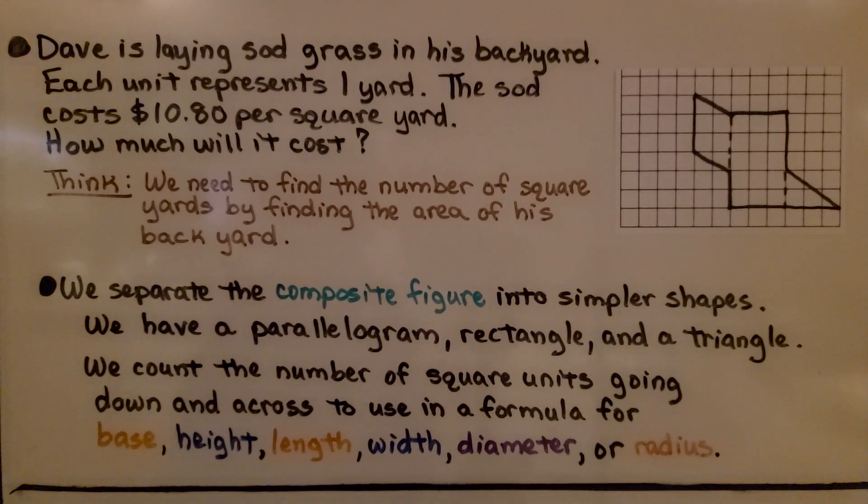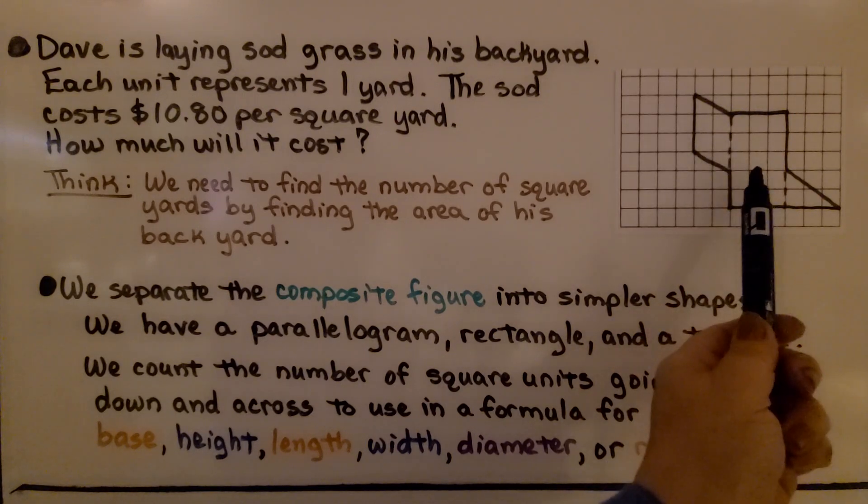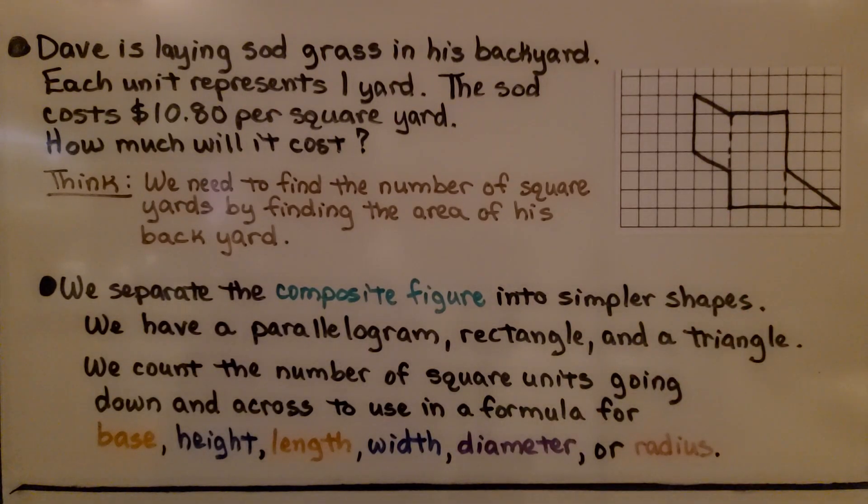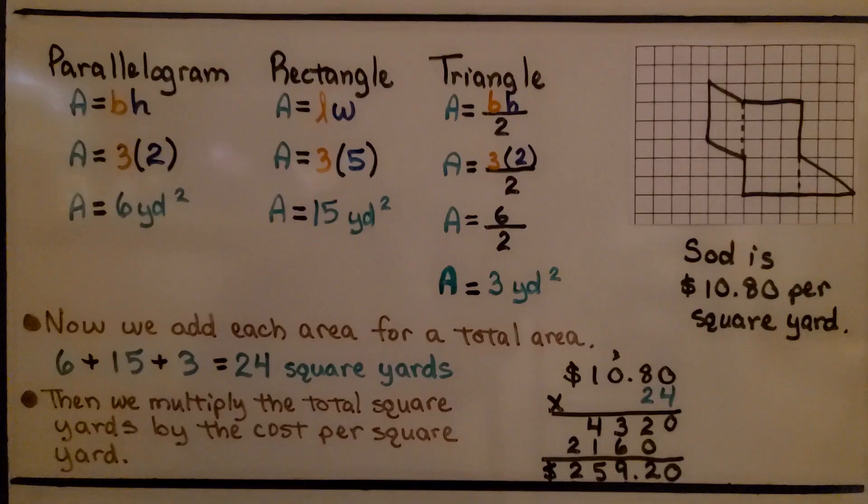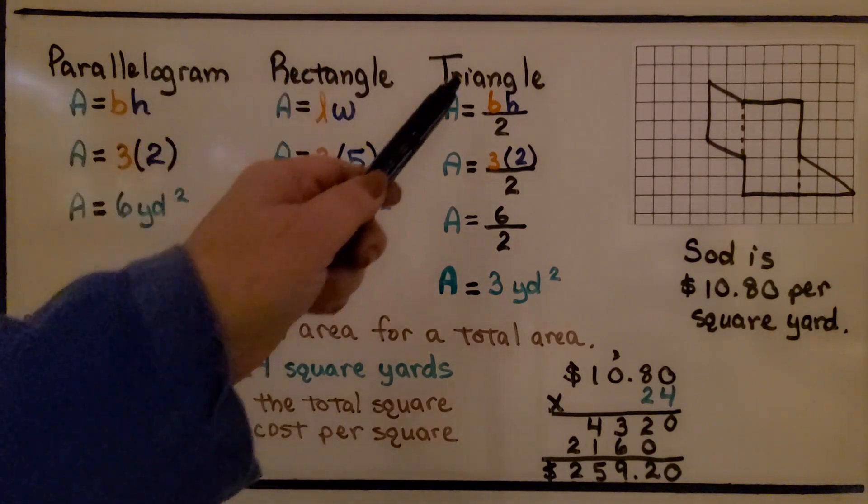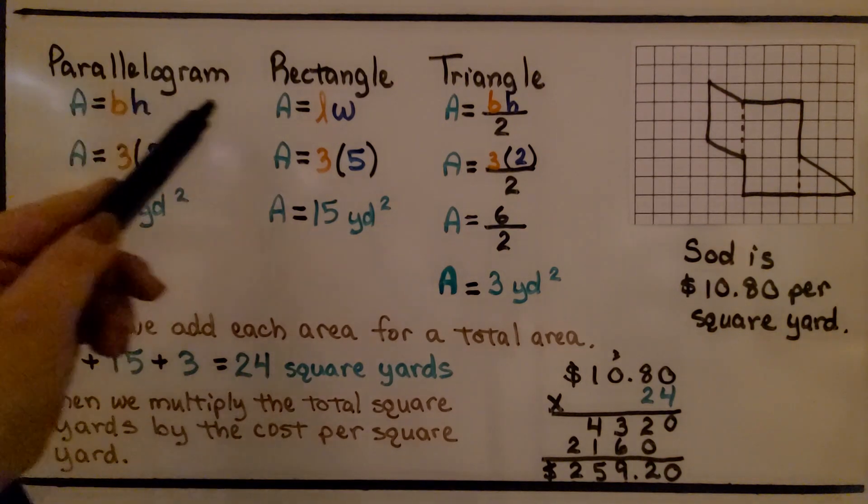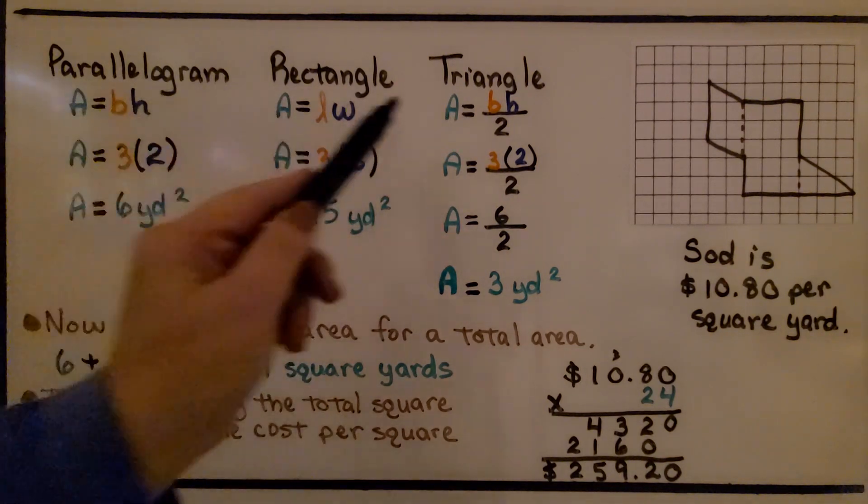We separate the composite figure into simpler shapes. So here we have a parallelogram, a rectangle, and a triangle. We count the number of square units going down and across to use in the formula for base, height, length, width, diameter, or radius. So our shape is separated into a parallelogram, a rectangle, and a triangle. We have the formula for each of those to find their area.